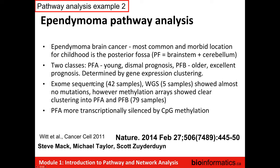Michael Taylor, a neurosurgeon at Sick Kids Hospital in Toronto who led this project, had previously identified two subtypes of this disease based on gene expression data clustering. The A subtype, or posterior fossa A, affects the youngest individuals and has a terrible outcome. Posterior fossa B affects the oldest individuals and has an excellent outcome. So even though anatomically people lumped all cases together as serious, Michael found that a subtype actually has an excellent outcome and maybe shouldn't be treated as aggressively as those with a terrible outcome.